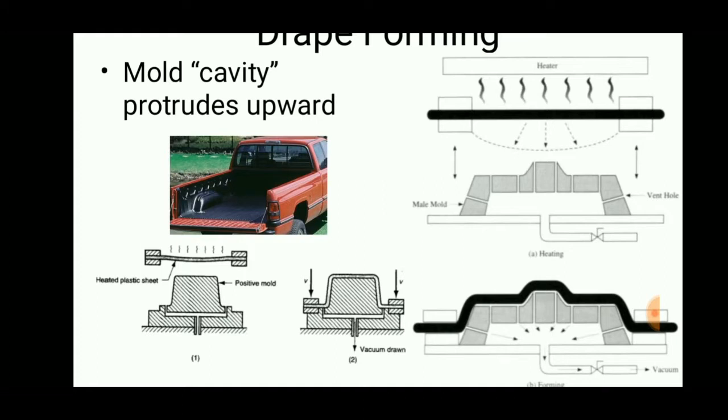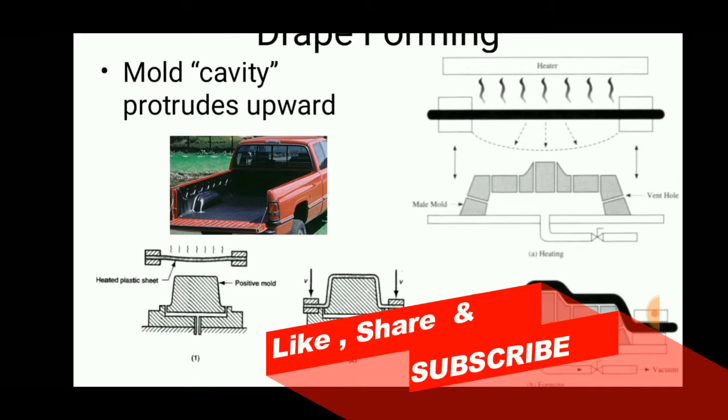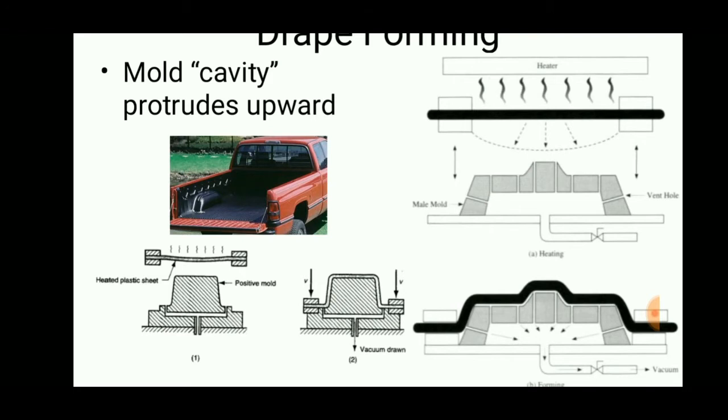No high power is required and it is an easy process. A heater with minimum power usage is also present, enabling mass production with higher productivity and high profit. These are all the details about the drape forming.